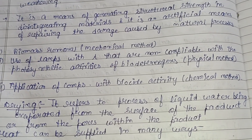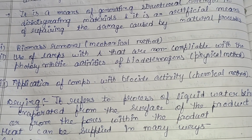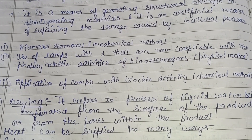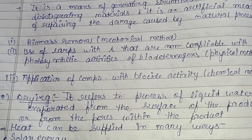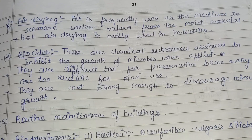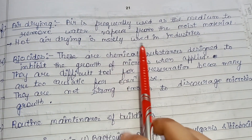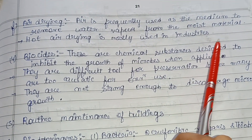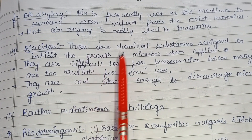The drying process refers to liquid water being evaporated from the surface of a product, because water provides suitable conditions for bio deterioration agents to grow. Heat can be supplied in many ways — solar energy, microwave, hot gas, steam. The air drying method uses air as a medium to remove water vapor from moist material, as water vapor also provides favorable conditions for bio deterioration agents. Hot air drying is mostly used in industries.